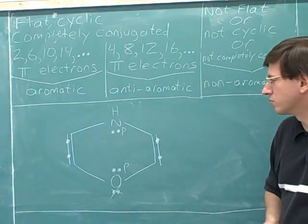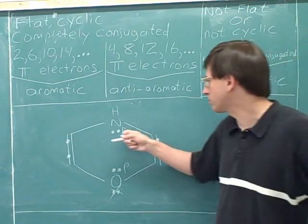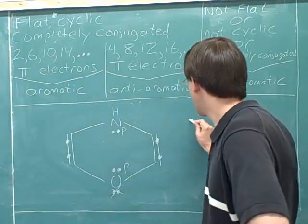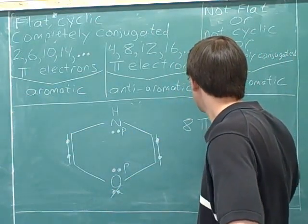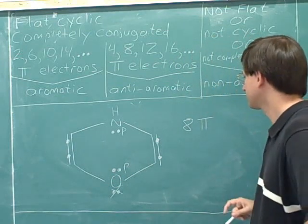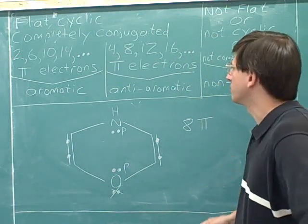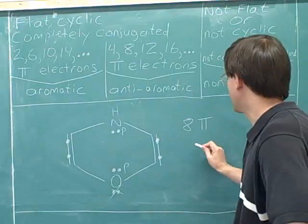So we have one, two, three, four, five, six, seven, eight pi electrons. Which means the molecule is anti-aromatic.